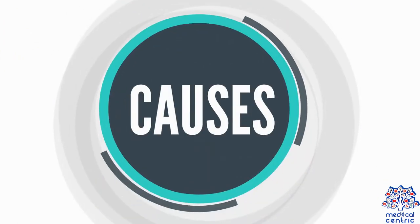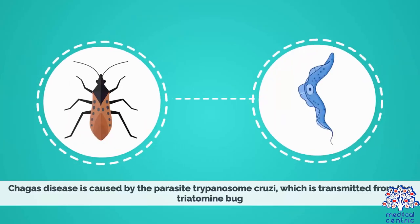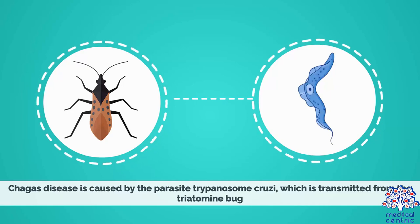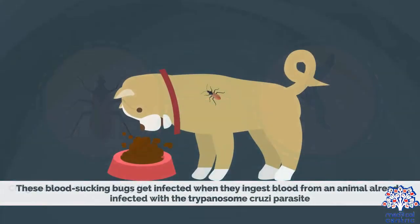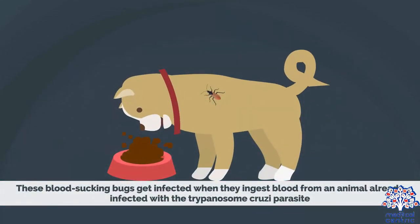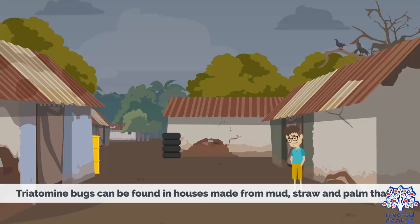Chagas disease is caused by the parasite Trypanosoma cruzi, which is transmitted from the triatomine bug. These blood-sucking bugs get infected when they ingest blood from an animal already infected with the Trypanosoma cruzi parasite. Triatomine bugs can be found in houses made from mud, straw, and palm thatch.